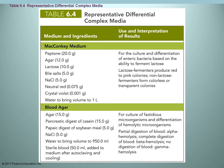Two different types of differential complex media are shown. Complex media — you know some of the components but not the exact chemical composition of things like peptone or pancreatic digest of casein. MacConkey agar is used to grow gram-negative organisms — it inhibits the growth of gram-positives through dyes added to the medium, and it differentiates based on whether the organism is a lactose fermenter or not.